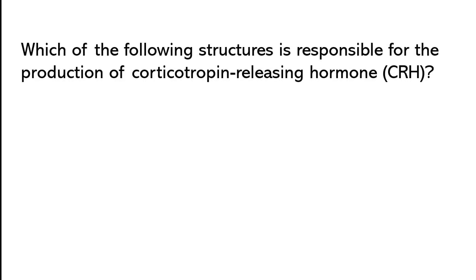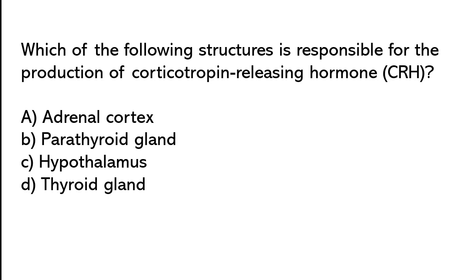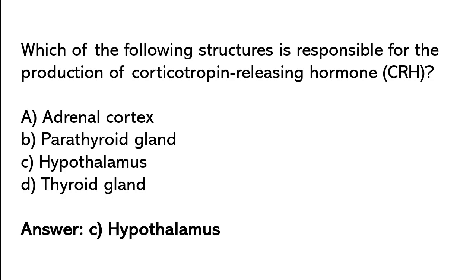Which of the following structures is responsible for the production of corticotrophin-releasing hormone (CRH)? Adrenal cortex, Parathyroid gland, Hypothalamus, Thyroid gland. So the correct answer is option C: hypothalamus.